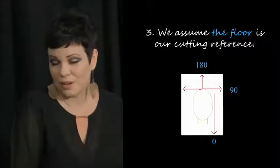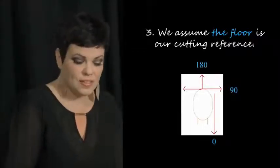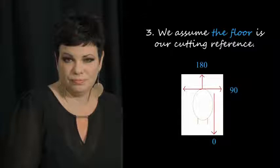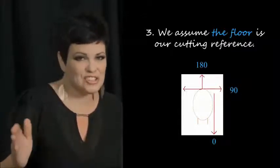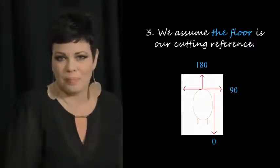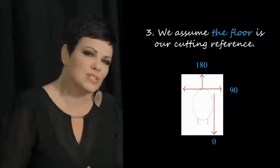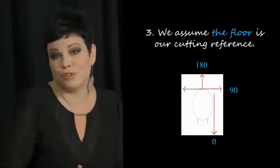And number three, we assume that zero is straight down, 90 is straight out, 180 is straight up. Math is absolute. It is not open for interpretation.